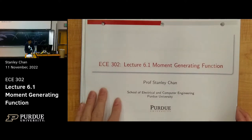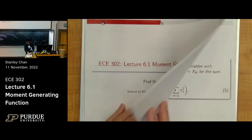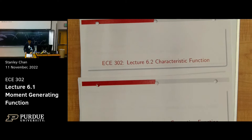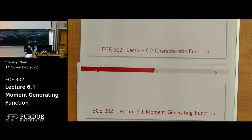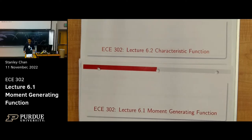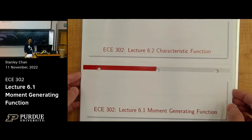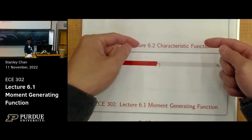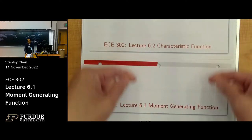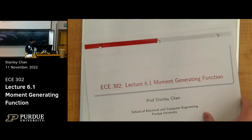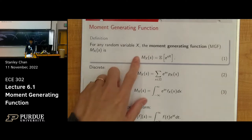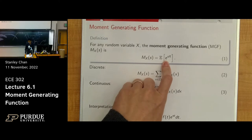Going back, let's talk about this concept: moment generating function, and one more — the characteristic function. They're sort of twins of each other, and we're going to look at them together. The moment generating function, if you want to call it, is the Laplace transform. The characteristic function is the Fourier transform.